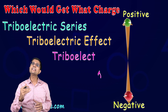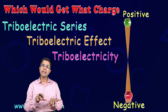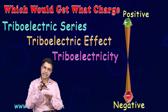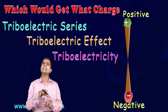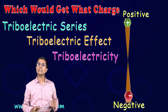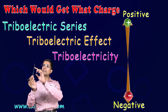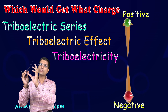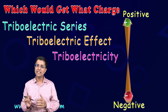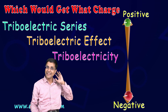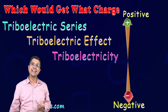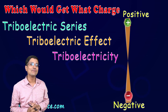The underlying reason for this effect is that electrons have greater affinity towards certain materials than others. For example, electrons have more affinity for this plastic scale than for my hair. Unfortunately, they don't like my hair so much.